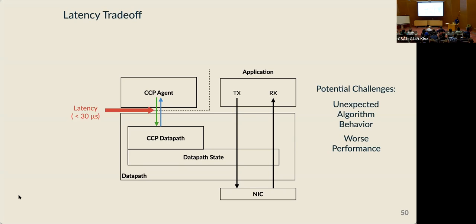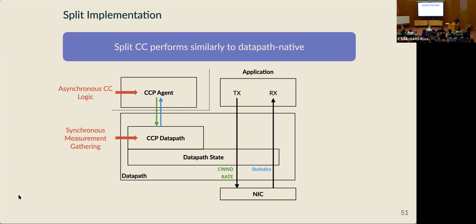This comes with an obvious trade-off: there's now latency involved in receiving information from and sending decisions to the data path. This is potentially bad because your algorithm might behave unexpectedly differently than a data path native implementation, and you might get lower performance. To address this, we propose that congestion control logic should run asynchronously from the data path. Communication between the two components will happen maybe only once or twice per RTT instead of on every packet. We split algorithm implementations into two components: a slow path component that runs asynchronously outside the data path runtime, and a fast path component that operates synchronously with arriving measurements but has a constrained API to ensure it won't affect performance.